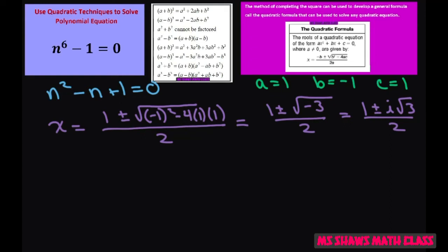Now notice for the other one we had n squared plus n plus 1 equals 0. So you do the same thing. It's going to be exactly the same. The only difference is my b is positive 1.